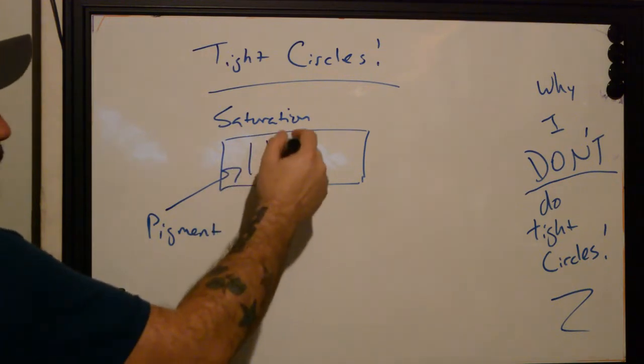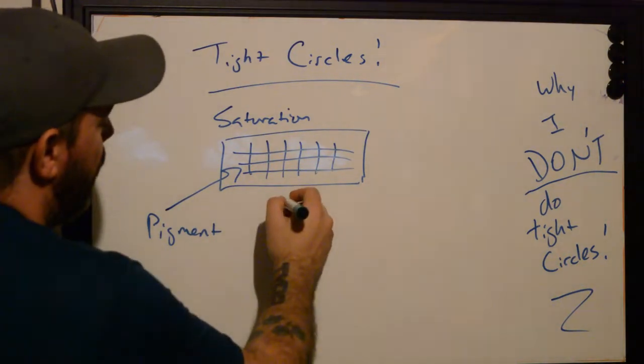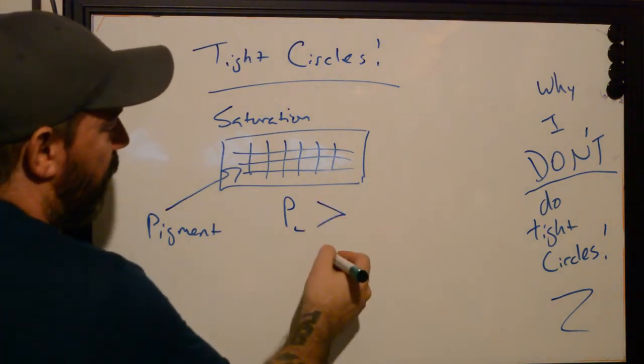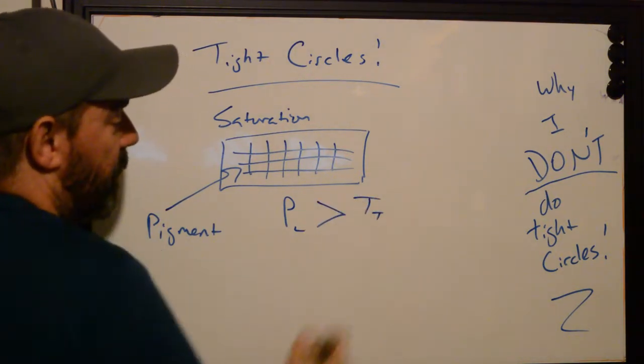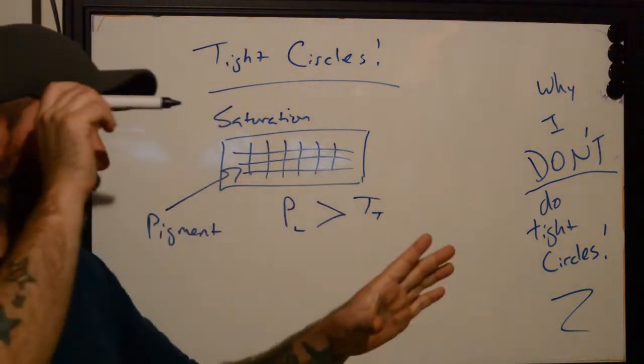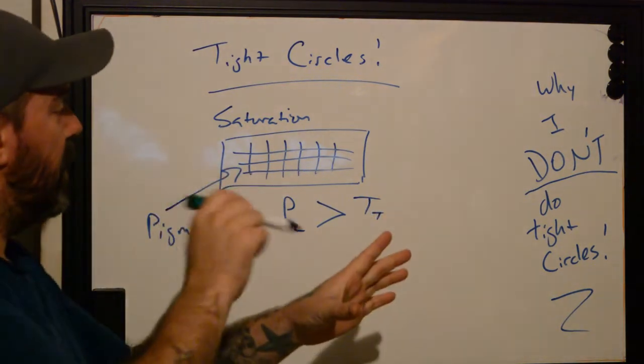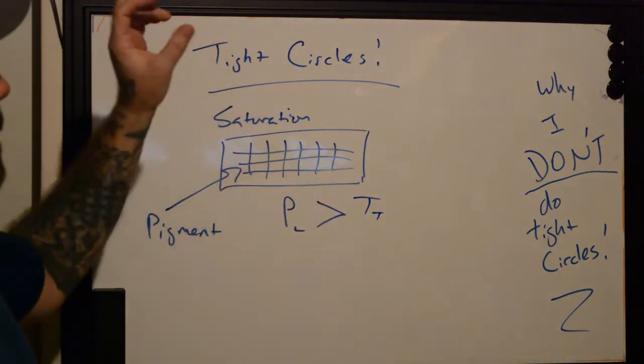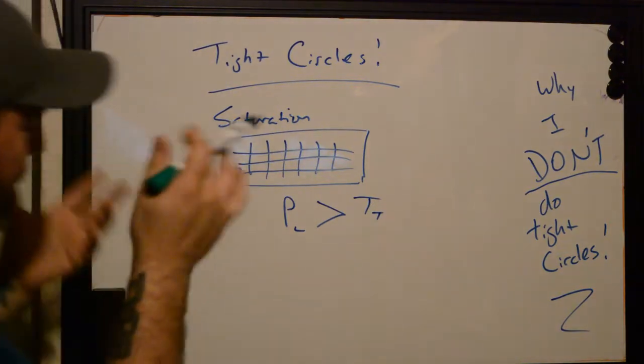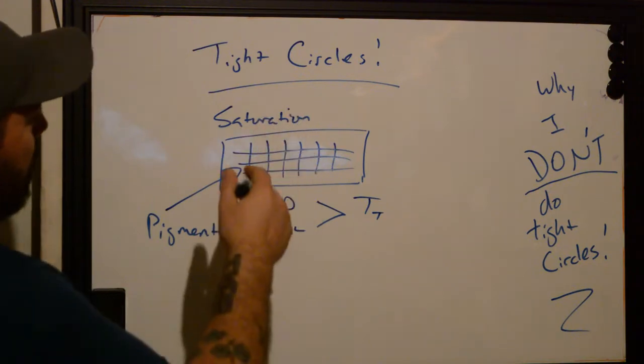What we're trying to do is create a situation where the amount of pigment that's in there, the pigment load, is gonna be greater than the time necessary to create trauma. The idea with this is that through as few strokes as necessary to actually create the illusion that that space of skin is completely and utterly saturated with pigment. It just looks like it so when we're doing this.